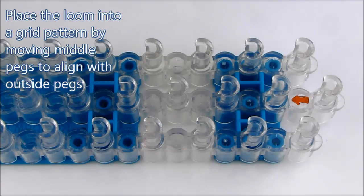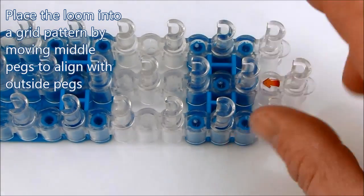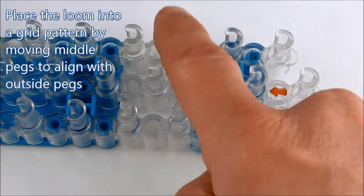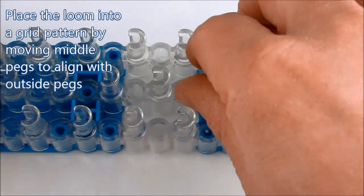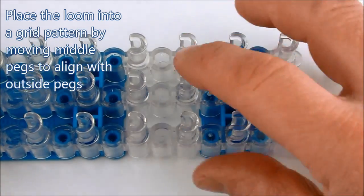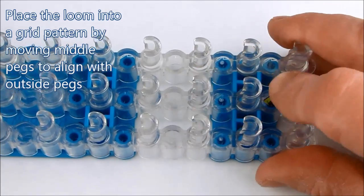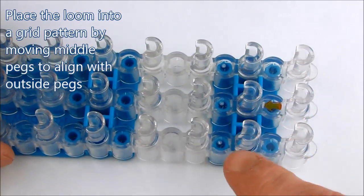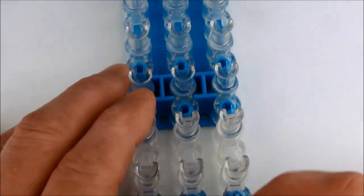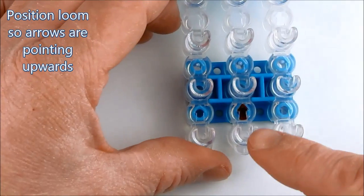We will start off by placing the loom into a grid pattern by moving the center row of pegs so it lines up with the outside rows. We position the loom so that the arrows are pointing upwards.